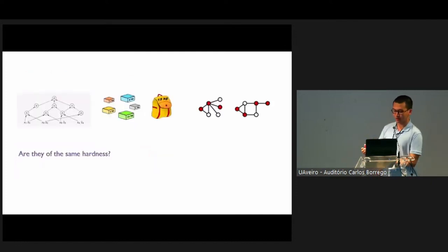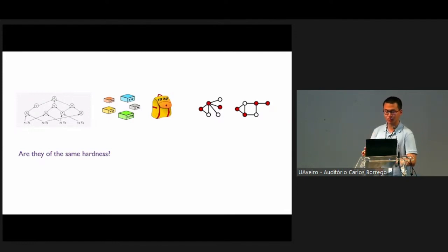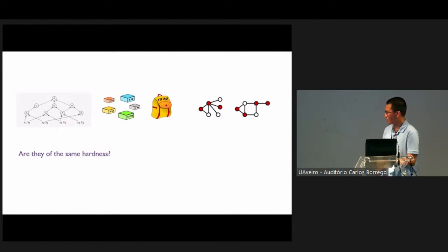So we would like to ask: are they of the same hardness? You might say yes, because they are all NP-complete problems. However, if you take a closer look at these problems, you will find that they are different in many ways. For example, for the knapsack problem, you will have a dynamic programming algorithm, which you would learn from any algorithms class. But the other two problems actually don't have such algorithms.